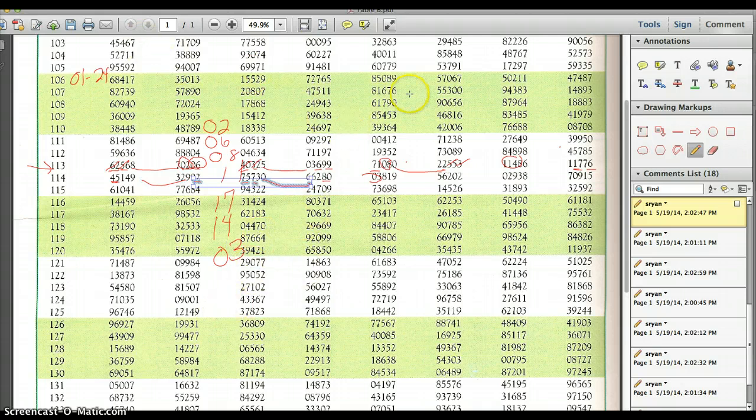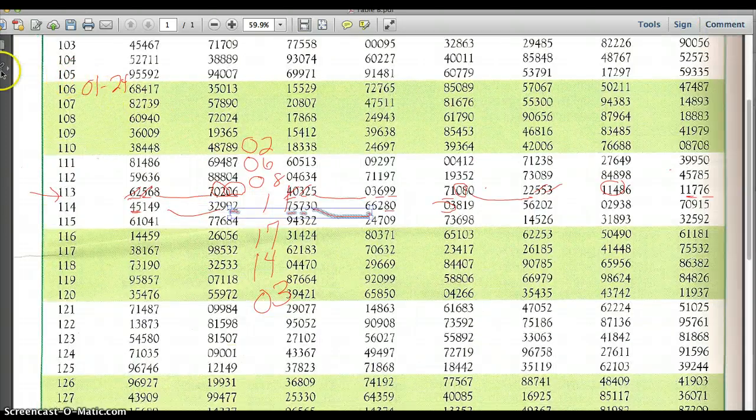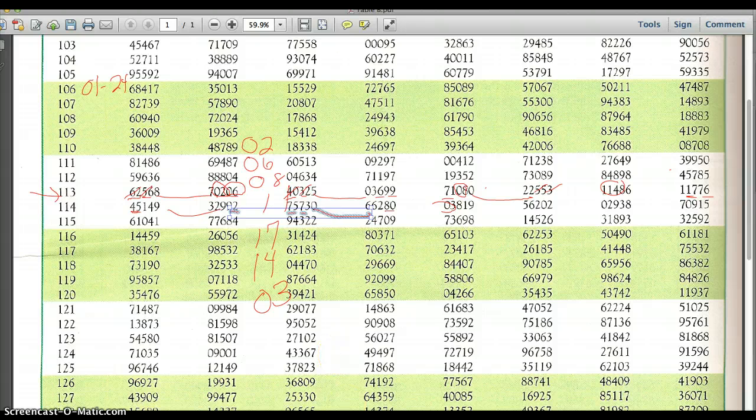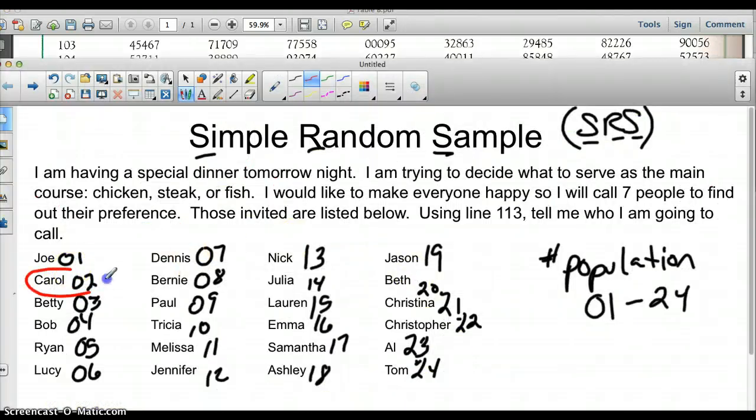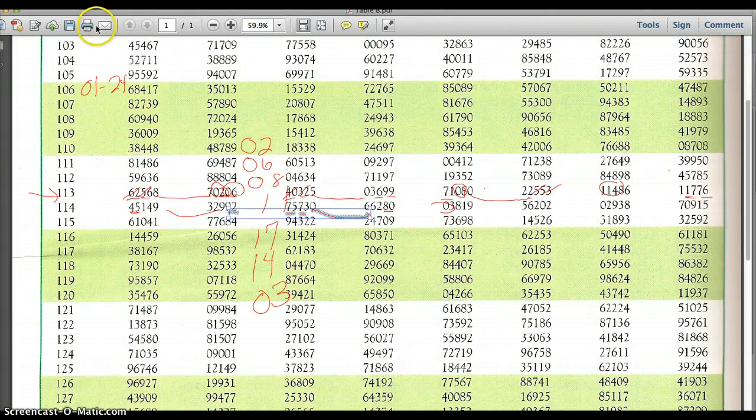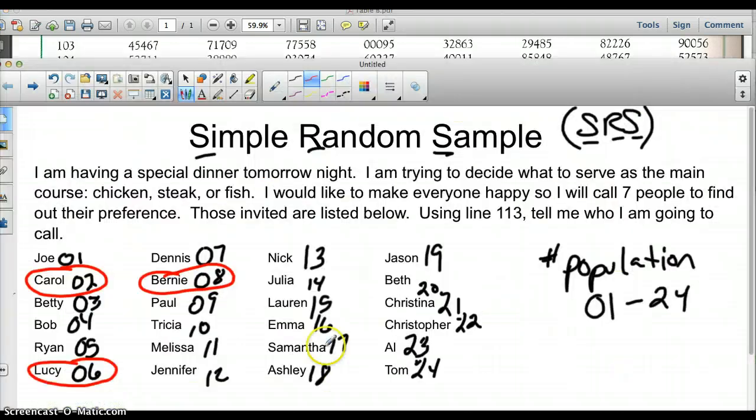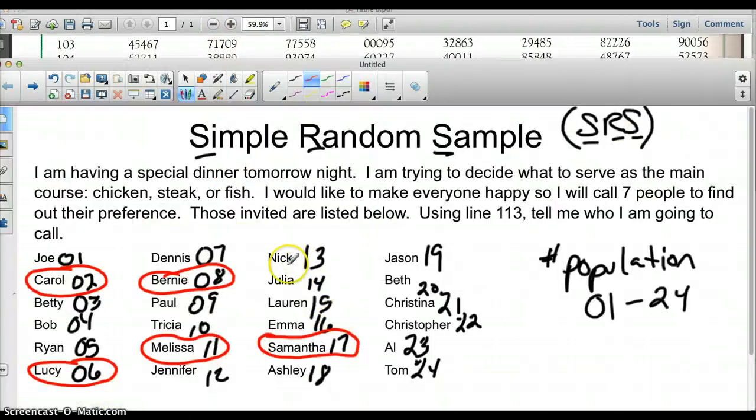We have to use our numbers that we just came up with and put those onto the notebook software. 02 we used—Carol. Carol is a choice. 06 was Lucy. We had 08, who was Bernie. Let's go back and get some of the other people. We had 02, 06, 08, we have 11, 17, so we have 11 and we have 17. And then we have 14 and 03.